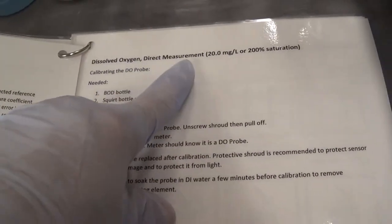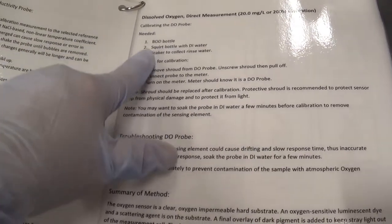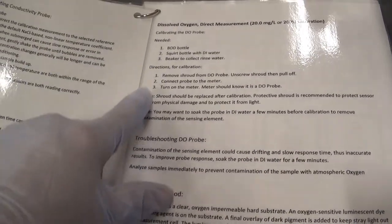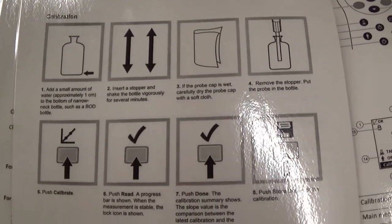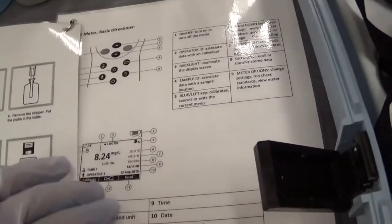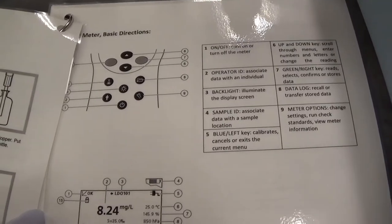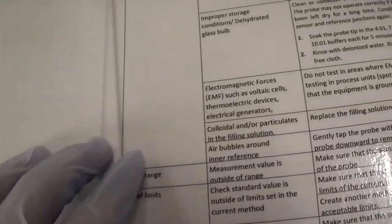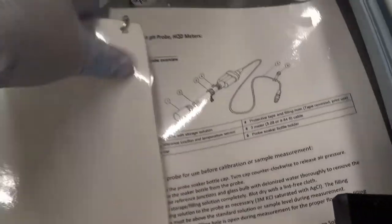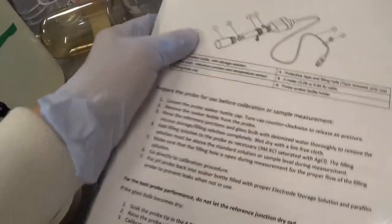We also have dissolved oxygen directions for calibration and troubleshooting. In here is what are all these buttons and what does the screen have. More troubleshooting on the meters. And that is it for our directions. First, we are going to do the pH probe.